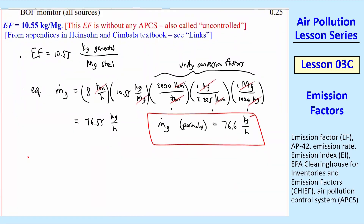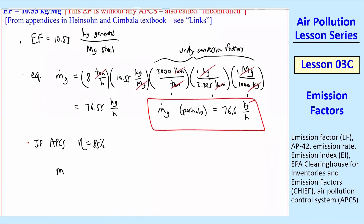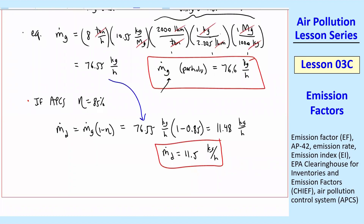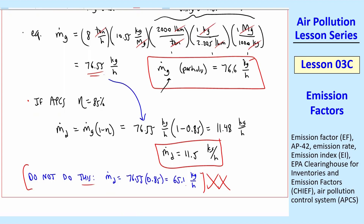Now, if we have an APCS with eta of 85%, how do we calculate the discharge? If there's no APCS, M-dot_G equals M-dot_D. But with the APCS, M-dot_D equals M-dot_G times (1 minus eta), giving 76.55 times (1 minus 0.85) equals 11.5 kg/hr. Do NOT simply multiply by eta — that would give 76.55 times 0.85 equals 65.1 kg/hr, which is wrong. That tells you how much was collected by the APCS, not how much was discharged.